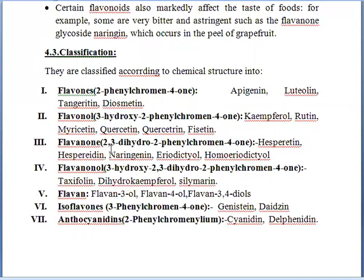Flavanones — the name is 2,3-dihydro-2-phenylchromen-4-one. Chemical components include hesperidin, naringin, eriodictiol, and homoeriodictyol. Then flavanonols — the name is 3-hydroxy-2,3-dihydro-2-phenylchromen-4-one. Chemical components include taxifolin, dihydrokaempferol, and silymarin. Then isoflavones — the name is 3-phenylchromen-4-one. Chemical components include genistein and daidzein. Then anthocyanidines — from 2-phenylchromenylium. Chemical constituents include cyanidin and delphinidin.